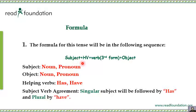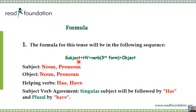The formula is: Subject + Helping Verb + Third Form of the Verb + Object. The subject can be a noun or a pronoun. The object can also be a noun or a pronoun. The helping verb here is 'has' and 'have'. You put the subject first, then the helping verb — has or have — then the third form of the verb, and then the object.